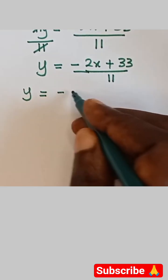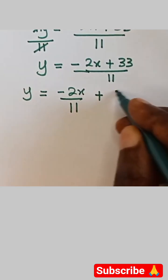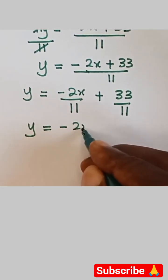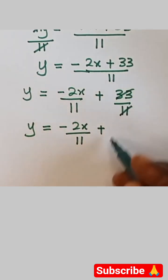This can also be written as y equals minus 2x over 11 plus 33 over 11. So y equals minus 2x over 11, and 11 can go in 33 which is 3.